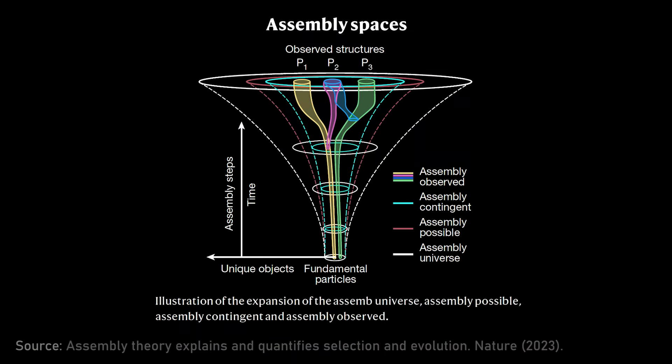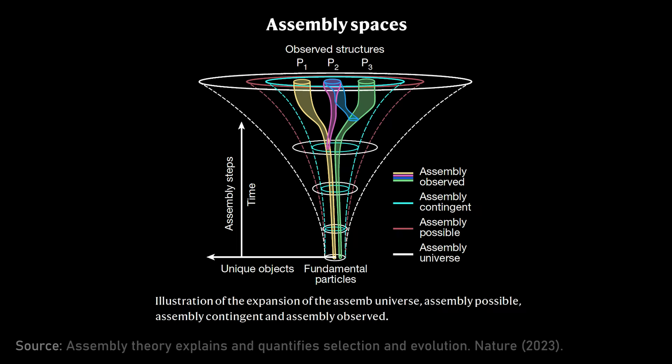In assembly theory we talk about the four universes: the assembly universe, the assembly possible, the assembly contingent, and the assembly observed. They're all scales in this combinatorial universe. The biggest one is the assembly universe, then assembly possible, assembly contingent, assembly observed. On the y-axis is assembly steps in time, and on the x-axis as the thing expands through time, more and more unique objects appear.